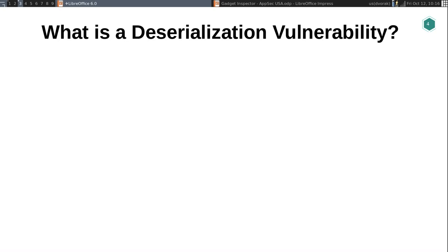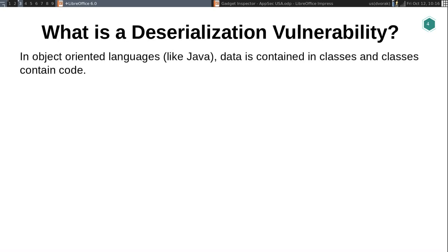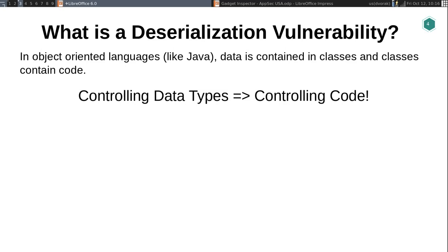So what is a deserialization vulnerability? In object-oriented languages like Java — which is the language I'm really talking about today, though most of this applies to any object-oriented language like C Sharp and PHP — data is contained in classes, and classes contain code. This is the idea of what object-oriented programming means. This has a really fundamental implication: if you control the data type that some of your code is operating on, then you're also controlling what code is running, because the code is associated with the data type.